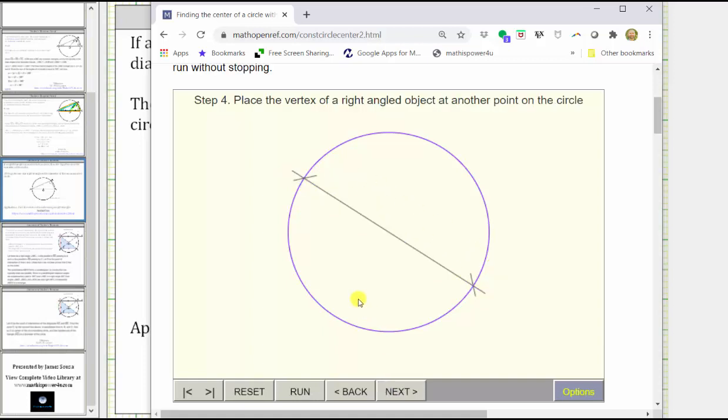Next, we place the vertex of a right angled object at another point on the circle. So basically, we repeat the process, make two marks where the sides of the right angle intersect the circle. Sketch the second diameter. The intersection of the two diameters will always be the center of the circle.